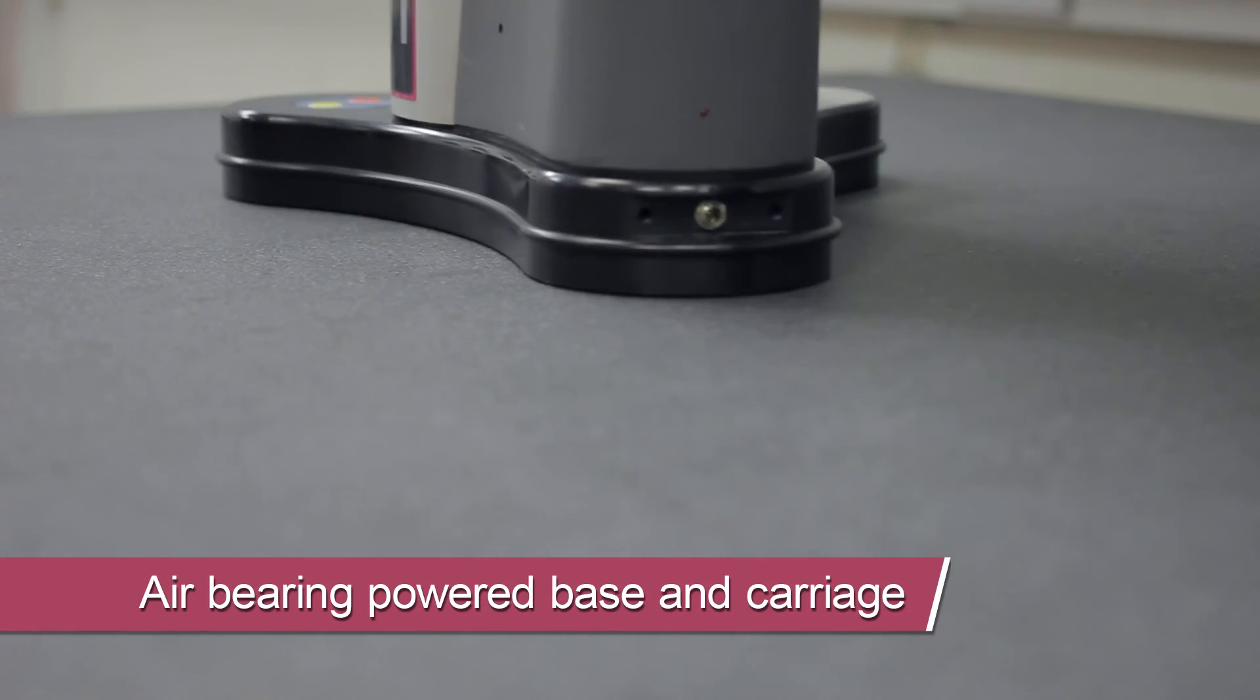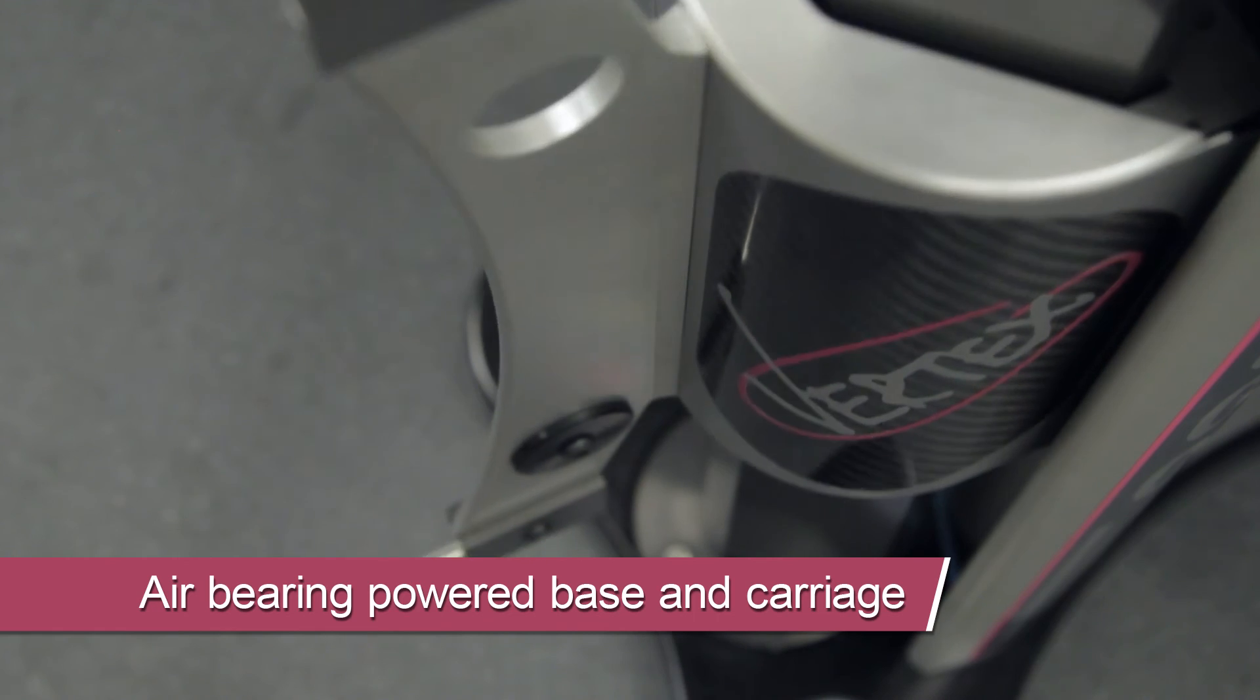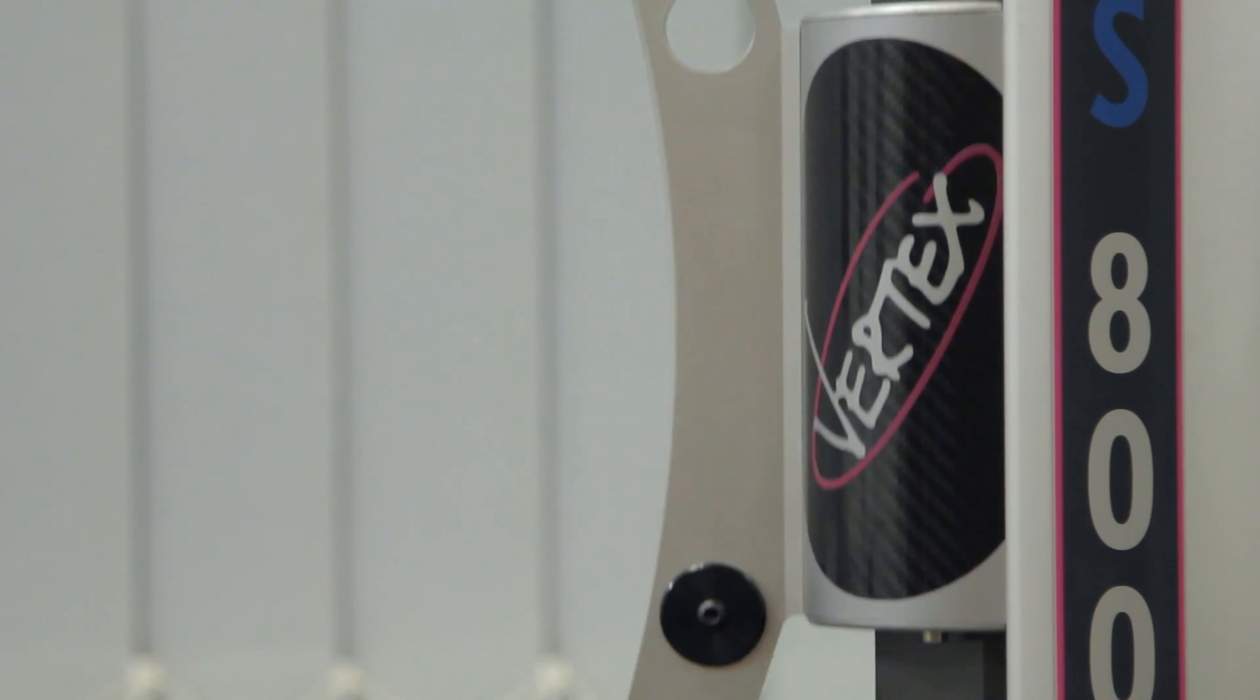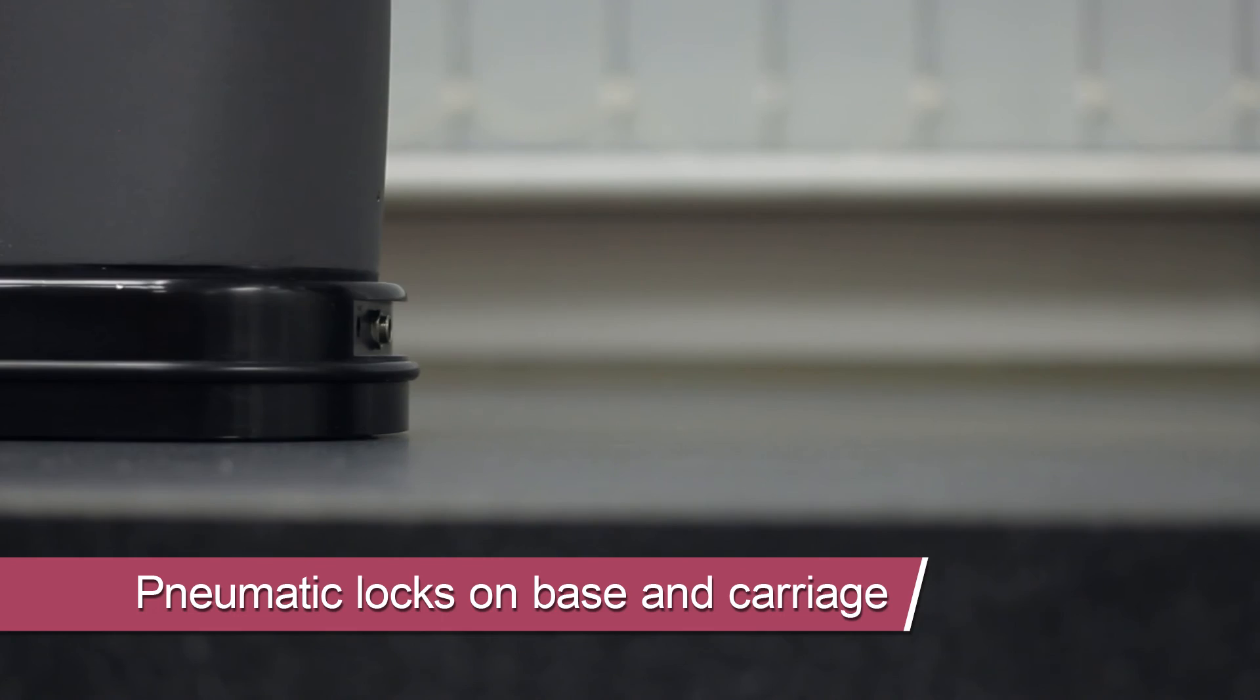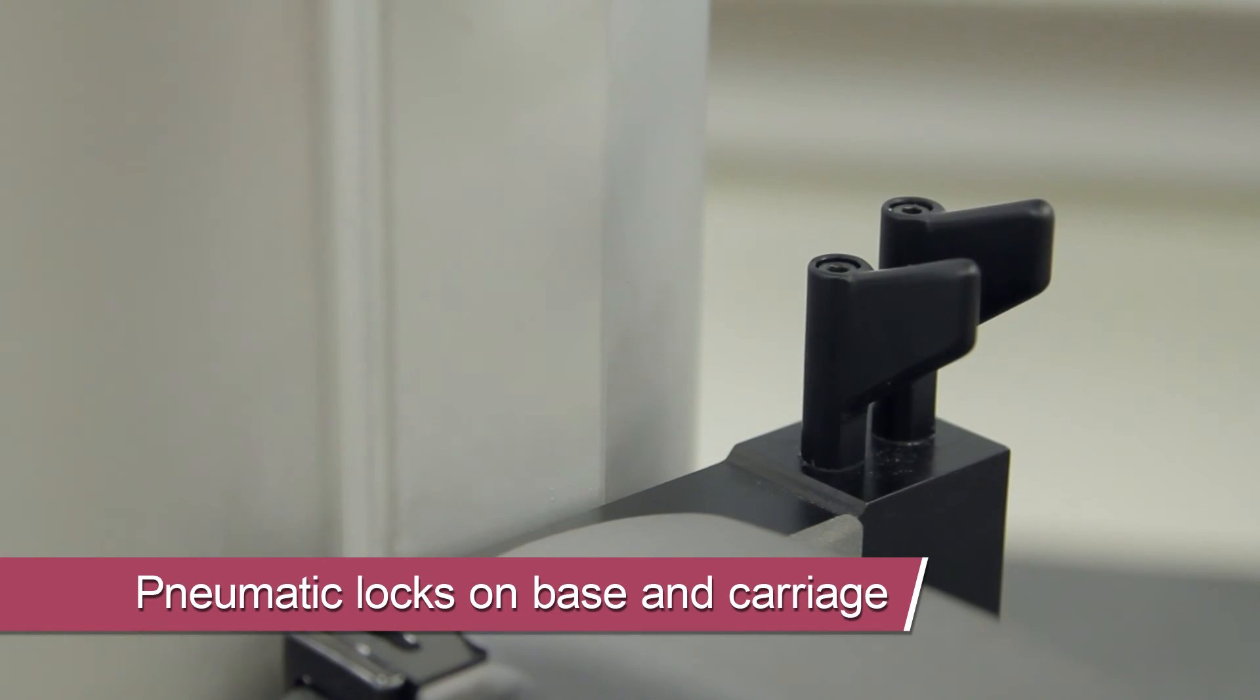Air bearings provide frictionless smooth movement of the vertex base and carriage. Pneumatic locks are used to control the air bearings during measurement.